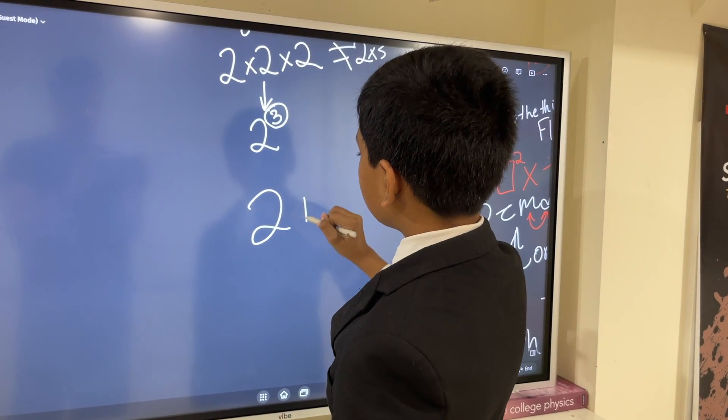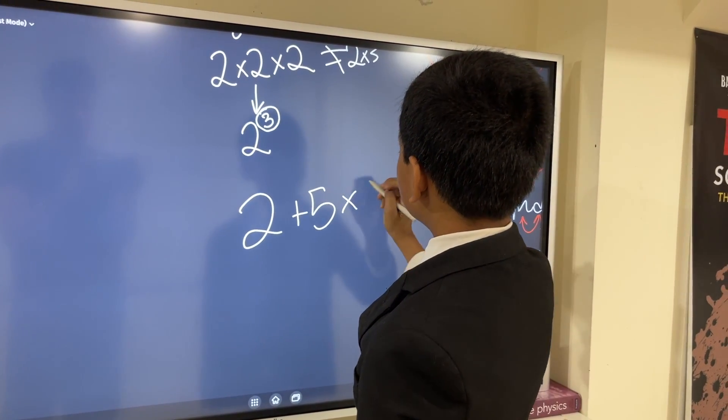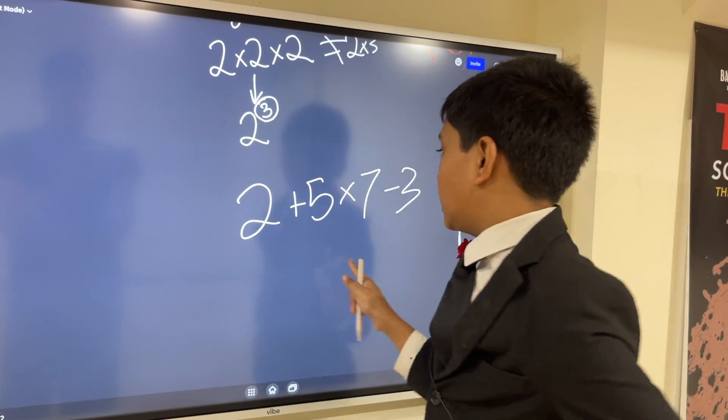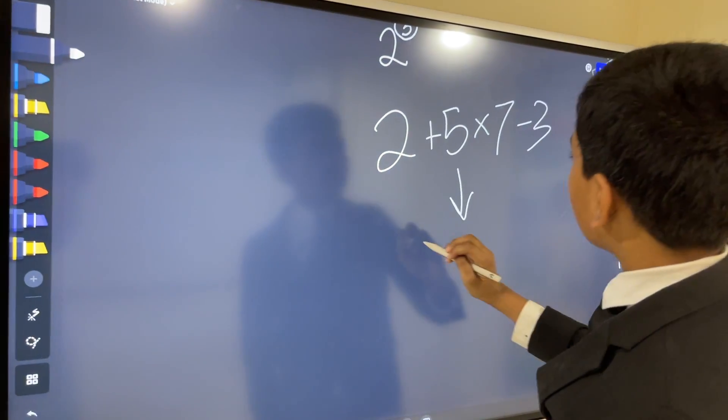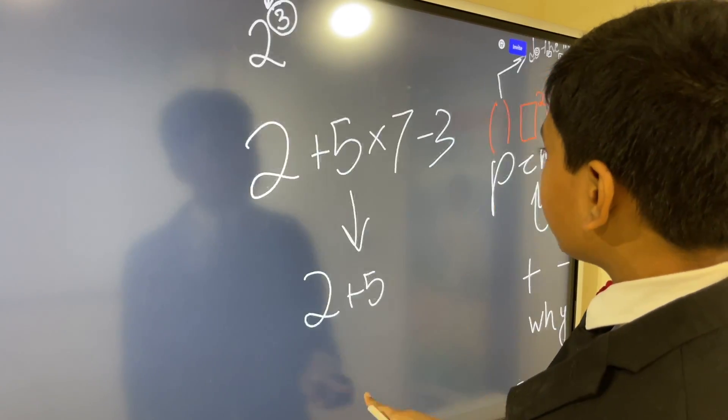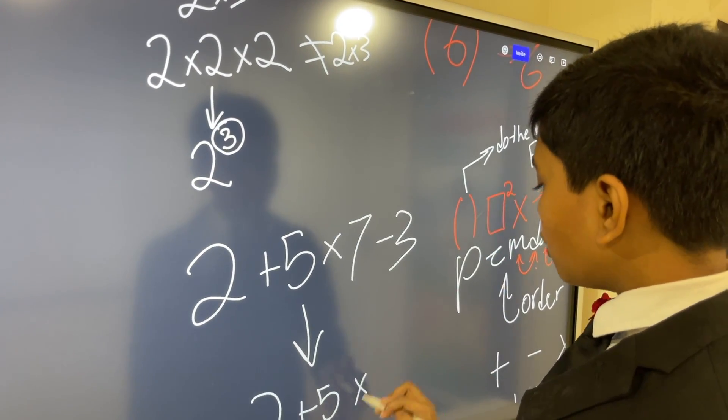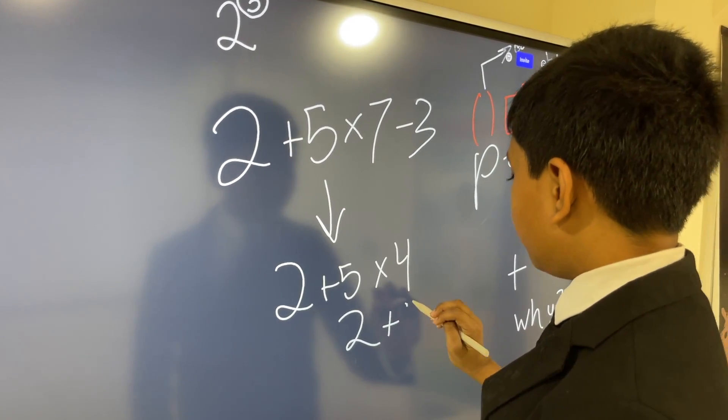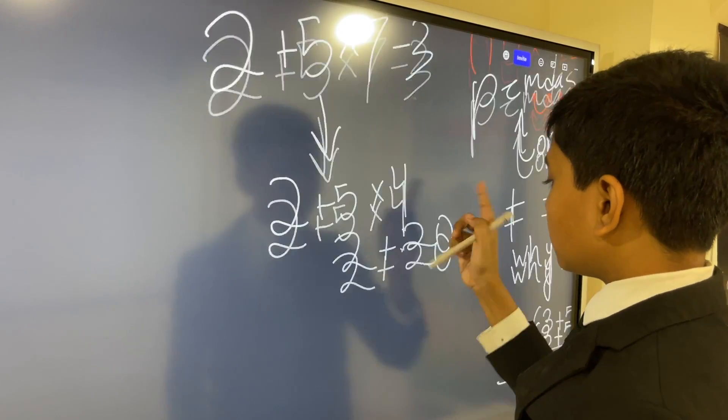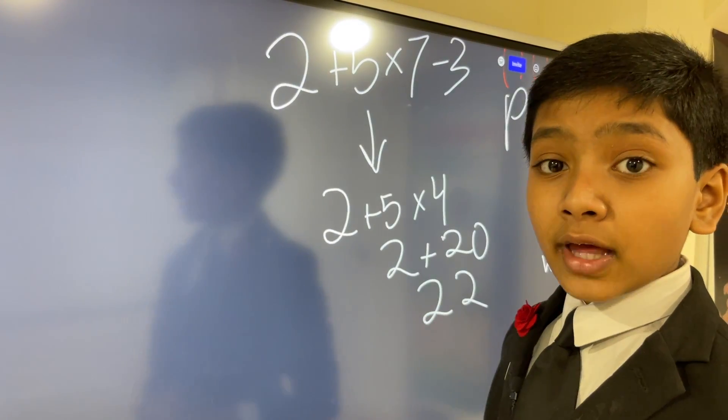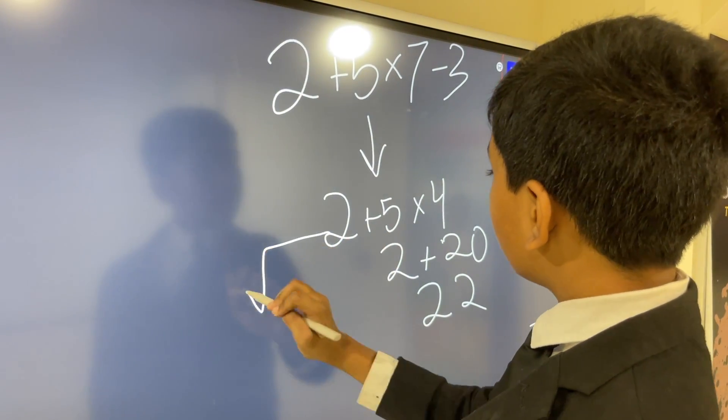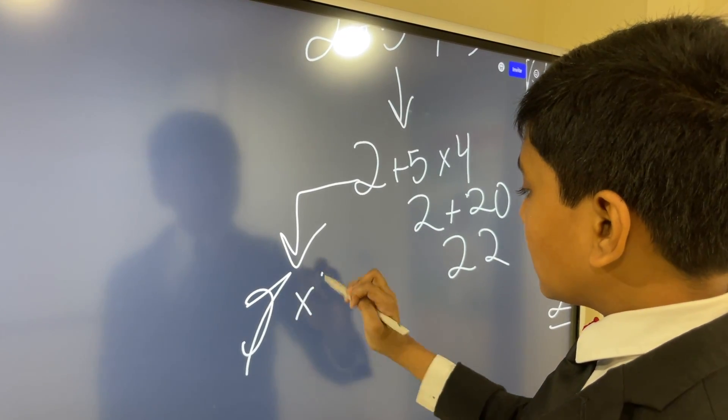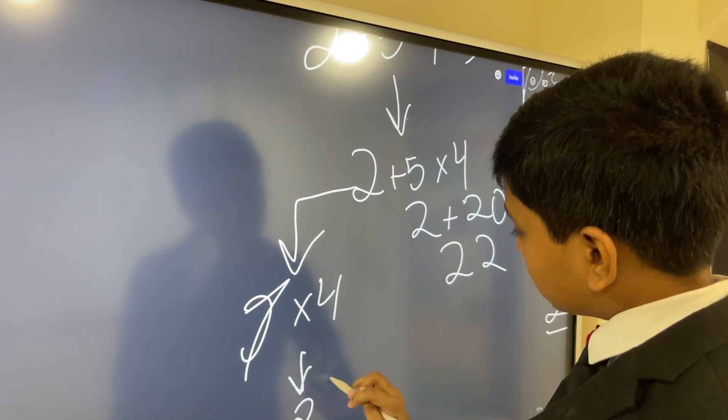So, 2 plus 5 times 7 minus 3. Let's see. There might be two answers to this. One person might go, hey, this is the same as 2 plus 5 times 7 minus 3 is 4. Then, 2 plus 5 times 4 is 20, 22. And, another person might go, no, you did it wrong. This should actually be 2 plus 5 is 7 times 4. So, it's 28.